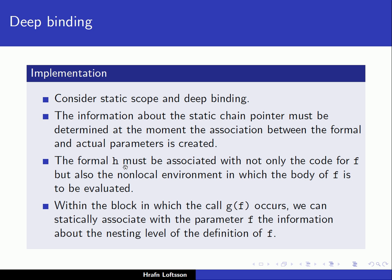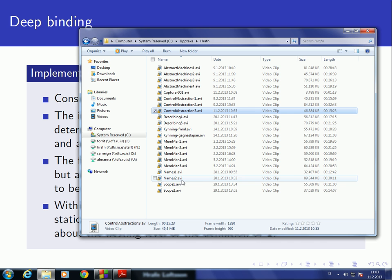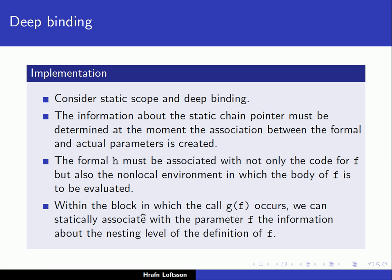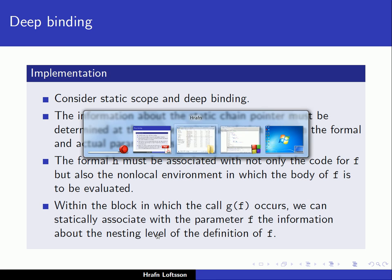The formal H must not only be associated with the code for F but also the non-local environment. When we call F, the formal must be associated with the machine code for F because we have to jump to that code. So it is not only the code itself but also the static chain pointer. Within the block in which the code of F occurs, we can statically associate with the parameter F the information about the nesting level of the definition of F.